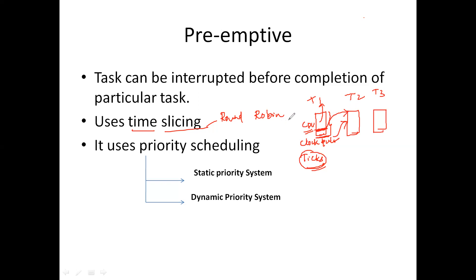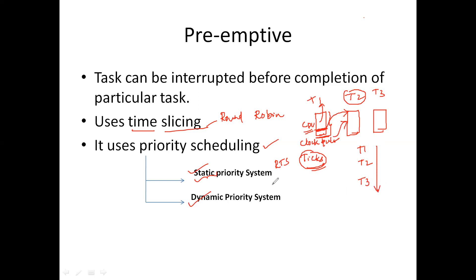Most tasks in a real-time operating system have a priority scheduling mechanism. Depending on which task has the highest priority, that particular task will be allocated the CPU after the completion of one task. There are two types: static priority and dynamic priority. In static priority, the priority of the task is fixed — for example, task 1 has first priority, task 2 has second priority, task 3 has third priority, and this order is fixed. Whereas in dynamic priority, the priorities can be changed even during execution time.